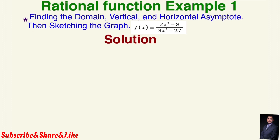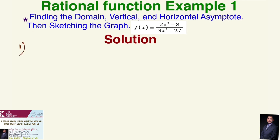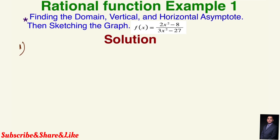First, let's start with finding the domain. The domain: what we do is look for the restrictions on the function. We can exclude those numbers. For example, in the numerator here there is no restriction — it could be any number, so it would be all of ℝ. However, in the denominator, it shouldn't be equal to zero, because the denominator shouldn't equal zero. So let's find where the denominator equals zero so we can exclude those numbers.